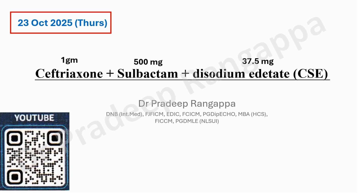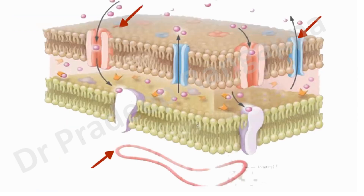The combination also contains around 37.5 milligrams of disodium edetate. We'll call it CSC — ceftriaxone, sulbactam, and EDTA. Let's talk about why this is an interesting molecule coming to market and whether we can position it at all. The whole reason this molecule has emerged is because of the resistance pattern.